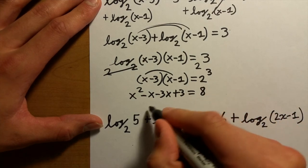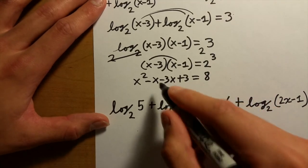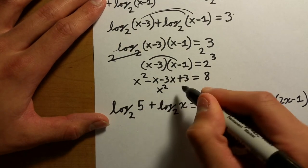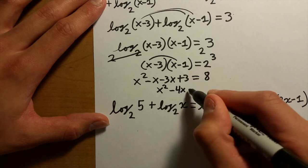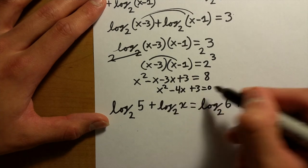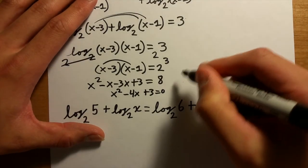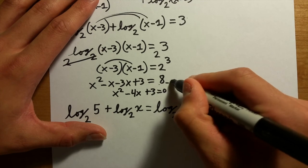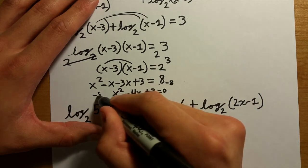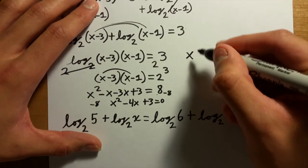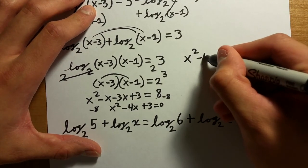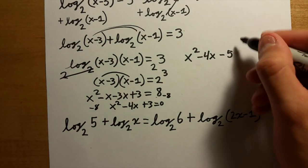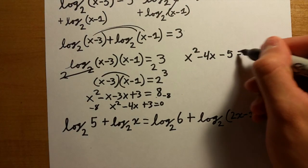So then you can rewrite this again. You want to get everything on one side. These get added together so it's going to be x² - 4x + 3 = 8. Then we want to get 8 on this side, so subtract 8 from both sides. So we have x² - 4x - 5 = 0.